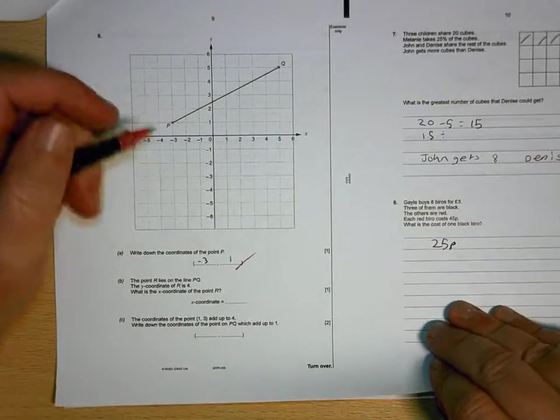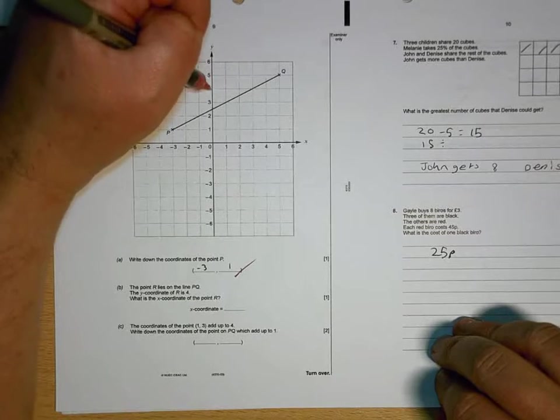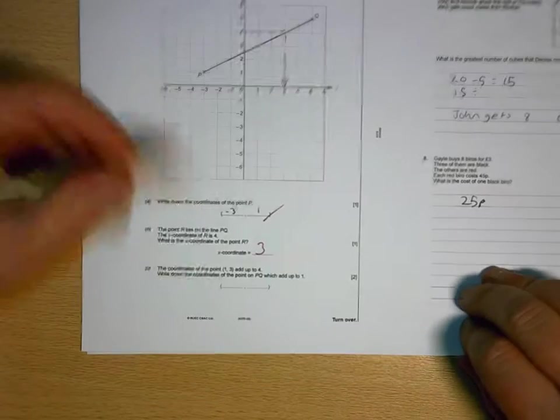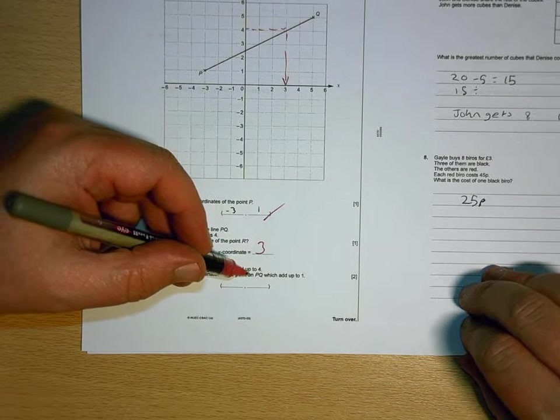Minus 3, 1 is correct. The Y coordinate is 4. What's the X coordinate? 3.